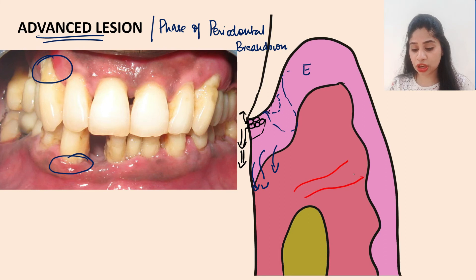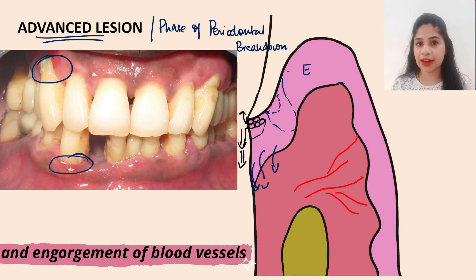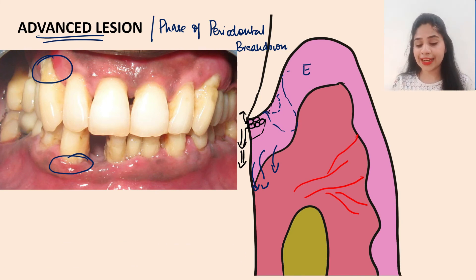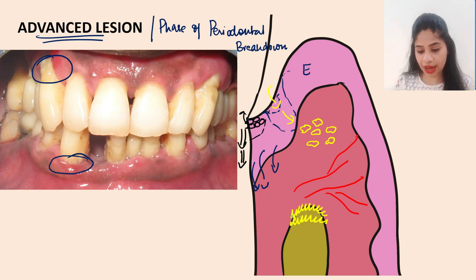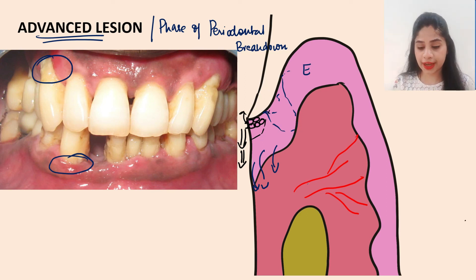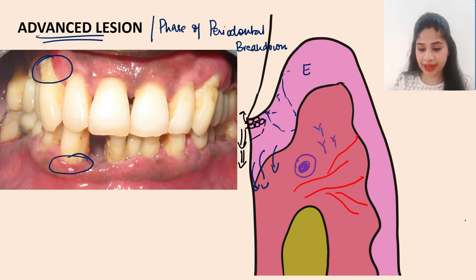In the connective tissue of Stage 4, there is vascular proliferation, vasodilation, increased vascular permeability, blood stasis, and impaired venous return. Bacteria gain access into the connective tissue through epithelial ulcerations, and their byproducts attack the alveolar bone, causing destruction of the periodontal apparatus. Plasma cells predominate and continue producing antibodies to combat the microorganisms that have now invaded the connective tissue.